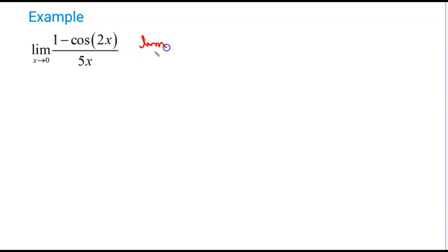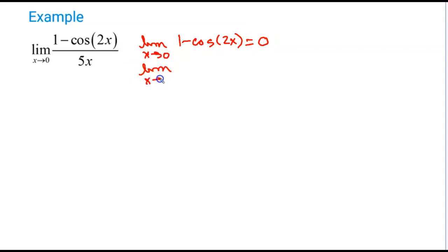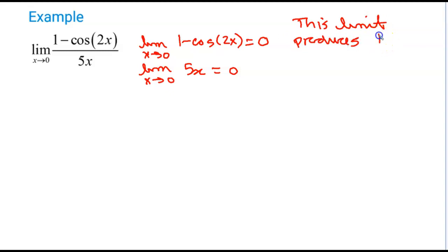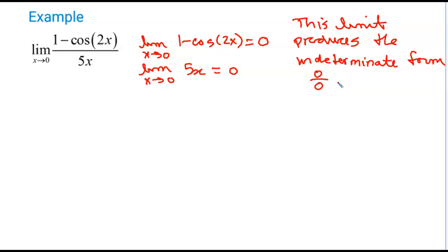Let's do the limit as x approaches 0 of the numerator. If I plug 0 in for x, cos(0) is 1, and 1 minus 1 is 0. And the limit as x approaches 0 of the denominator also equals 0. Therefore, this limit produces the indeterminate form 0 over 0. Do not write that the limit equals 0 over 0, because that is not correct. Just state that this limit produces the indeterminate form 0 over 0.